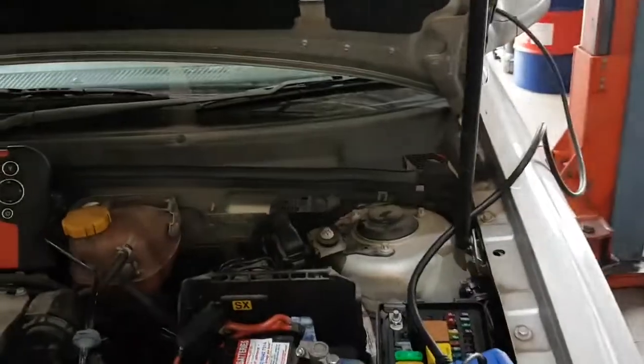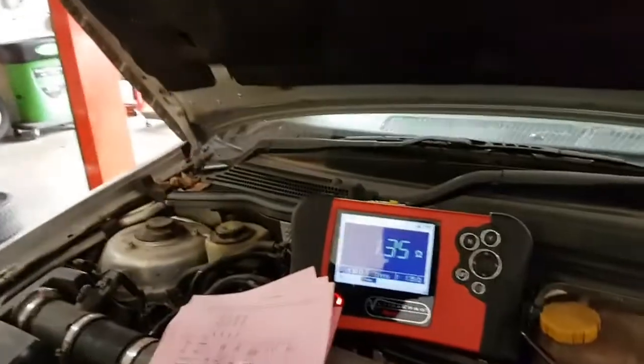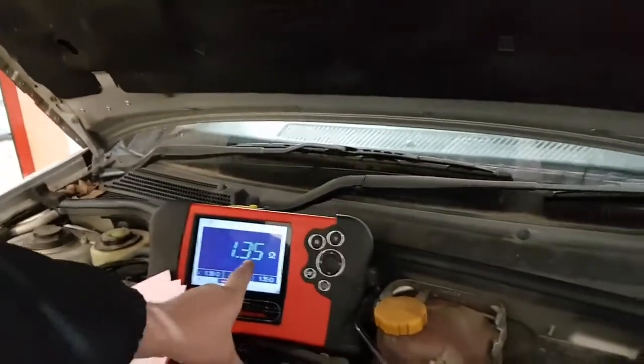And I've just put my CAN test box onto the DLC and I've connected my ohm meter to pins 6 and 14 on the bus with the battery disconnected. And you can see here we've got 1.35 ohms. Now most of you guys probably know that we should be looking at 60 ohms. We have two 120 ohm resistors in parallel so we get 60 ohms.